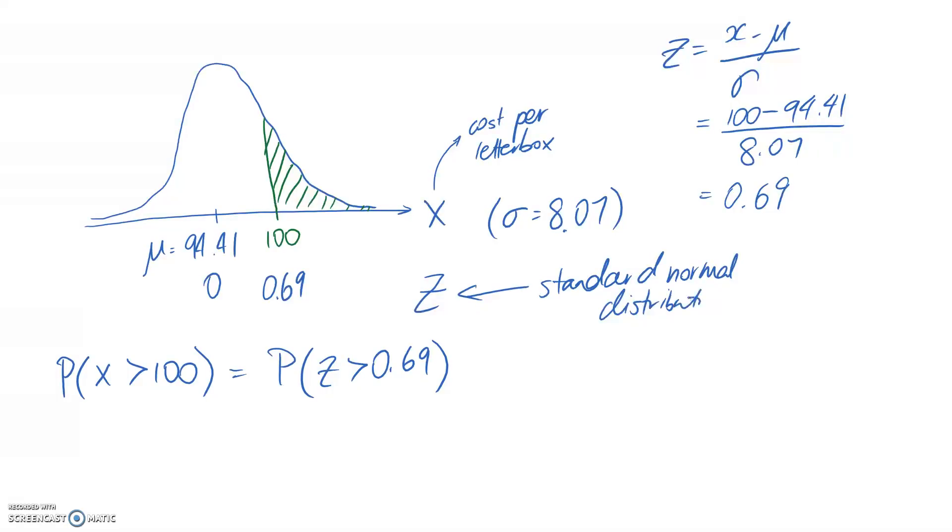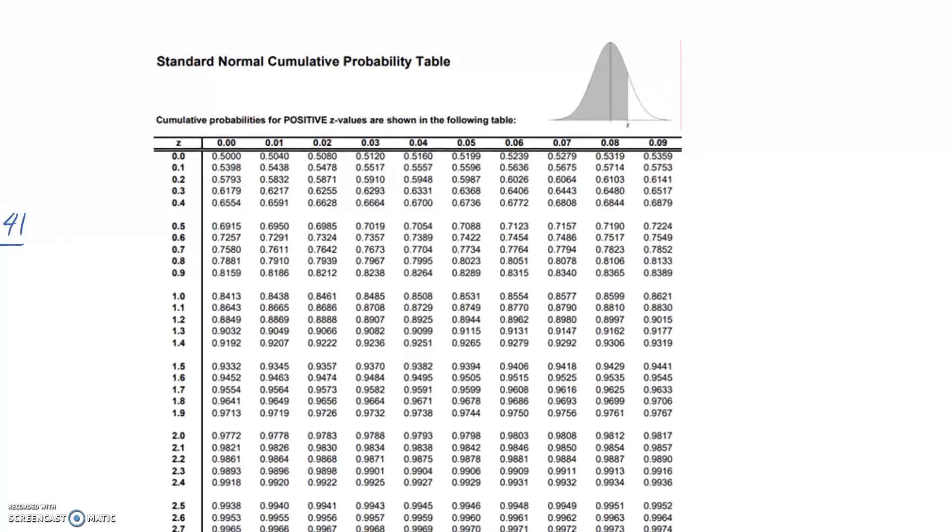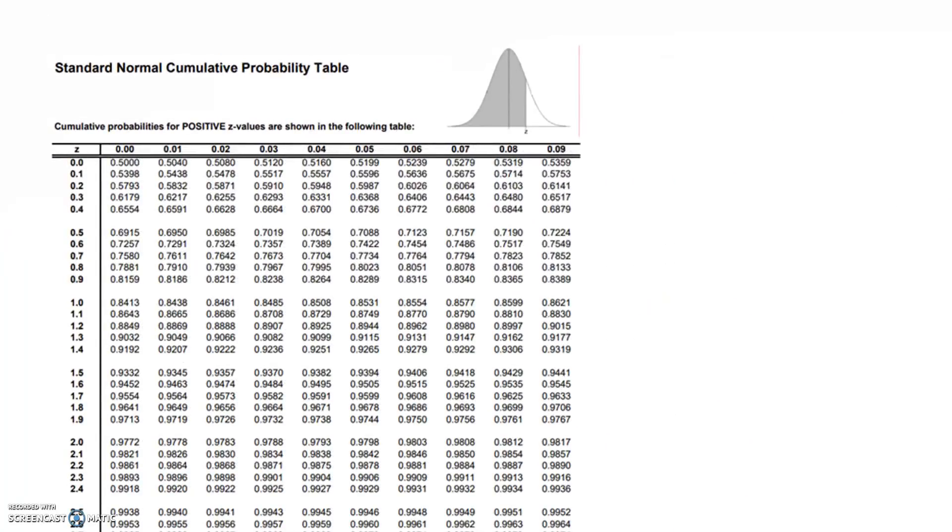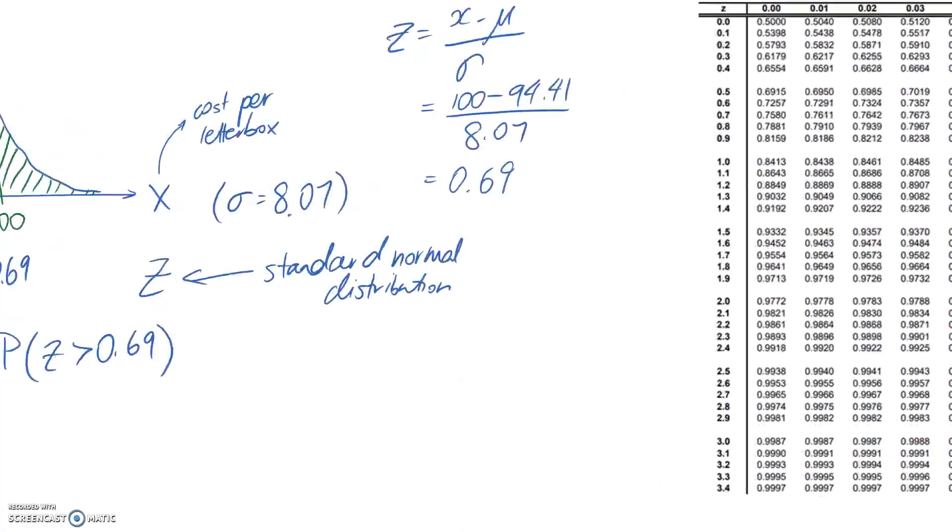We need to go over to our table. What we can see is that this table is quoting us the probability of everything up until we reach a z value. Now if we look at what we've got at the moment, it's kind of like the flip of that - we want the back end.